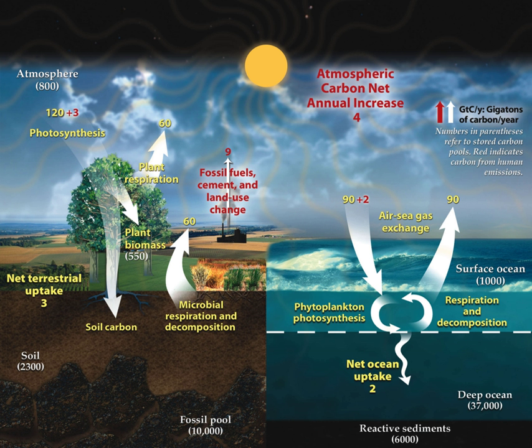Since the Industrial Revolution, human activity has modified the carbon cycle by changing its components' functions and directly adding carbon to the atmosphere. The largest human impact on the carbon cycle is through direct emissions from burning fossil fuels, which transfers carbon from the geosphere into the atmosphere. The rest of this increase is caused mostly by changes in land use, particularly deforestation. Another direct human impact on the carbon cycle is the chemical process of calcination of limestone for clinker production, which releases CO2. Clinker is an industrial precursor of cement.